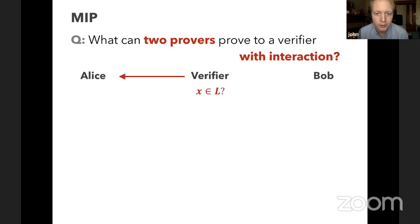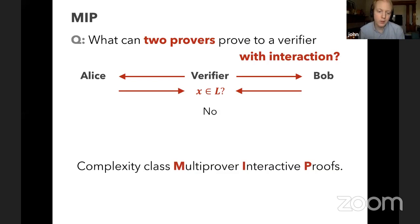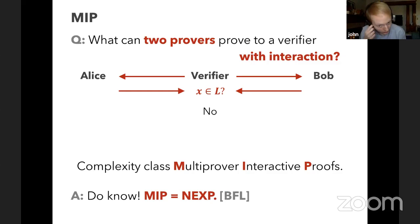The only means of communication between parties are between the provers and the verifier. An instance of this MIP protocol looks like this: the verifier asks Alice a question and also Bob a question, then gets back an answer from Alice and an answer from Bob. Based on these answers, the verifier will either say yes, convinced that x is in language L, or no, unconvinced. This complexity class is called multi-prover interactive proofs, or MIP for short.